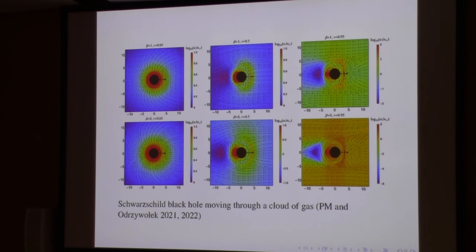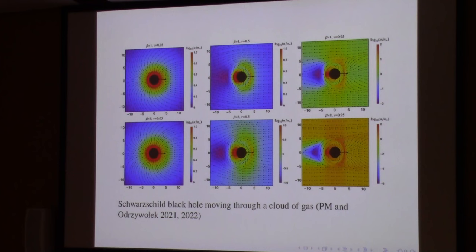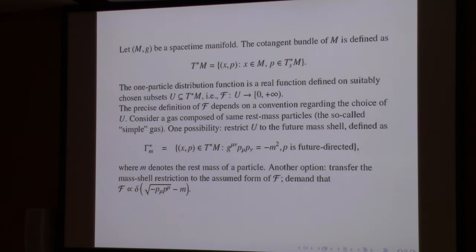This comes from some earlier papers where we were working analytically — this is an example of what you can do analytically if you can control the phase space. These are models of vehicles moving through gas. The colors tell you the density of gas and the arrows show the directions of motion. This is what you can do when you can treat the problem analytically, and now I would like to present the Monte Carlo version.